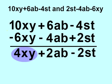So 4xy plus 2ab minus 2st is our answer. Let's do another one.